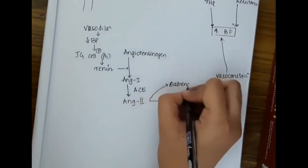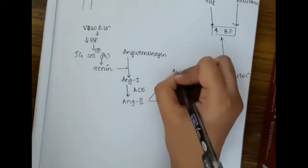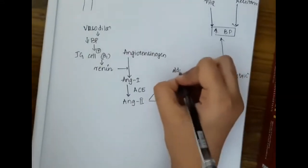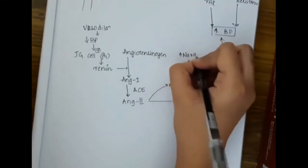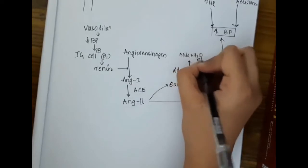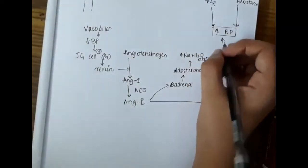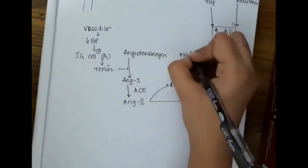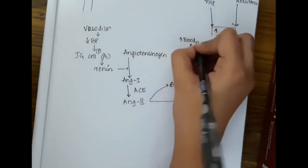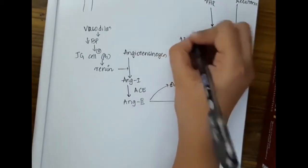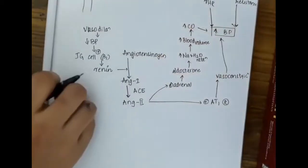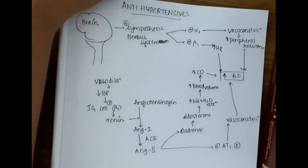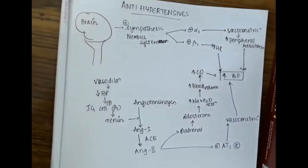Angiotensin 2 also activates the adrenal gland, causing aldosterone release, which increases sodium and water retention. This increases blood volume and finally increases cardiac output, thus increasing blood pressure.